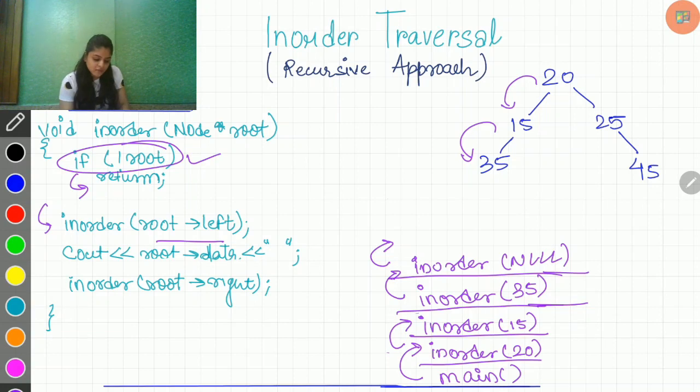So my control will go back to this function. Now when the control is in this function, we have already executed this line. So it starts from this line now.